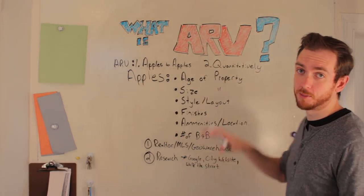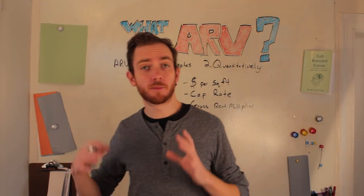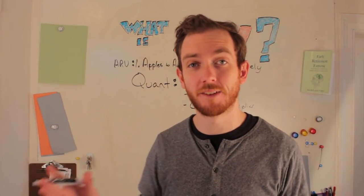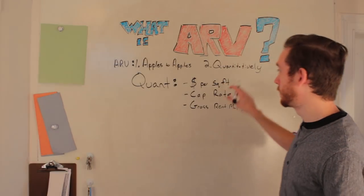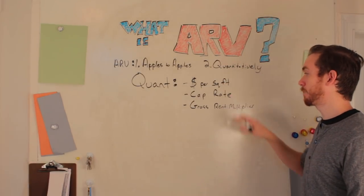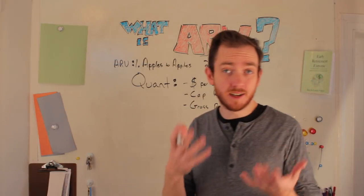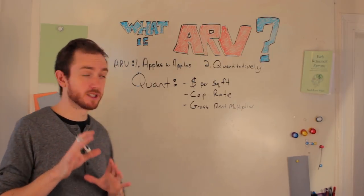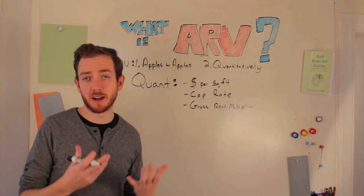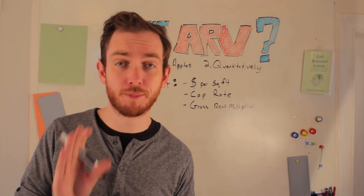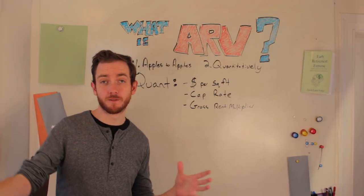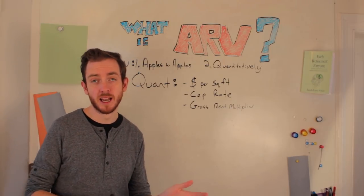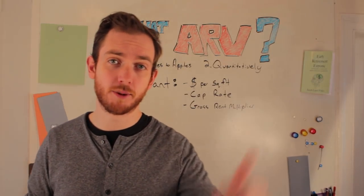Now let's look at the quantitative approach to determining ARV. For this approach, we're going to look at calculations used by other real estate investors and buyers in the market — in particular, dollar per square foot, cap rate, and gross rent multiplier, as well as whatever metrics are being used by buyers in your specific market. For dollar per square foot, buyers may be used to paying $100 or $200 per square foot. You simply take the total square footage of the property, multiply it by that dollar amount to get a ballpark figure, then adjust for unusual amenities your property has or doesn't have.